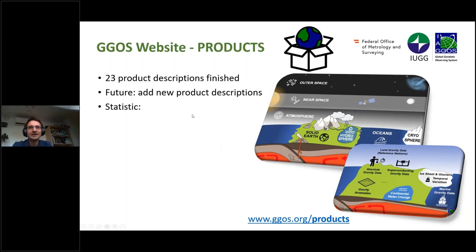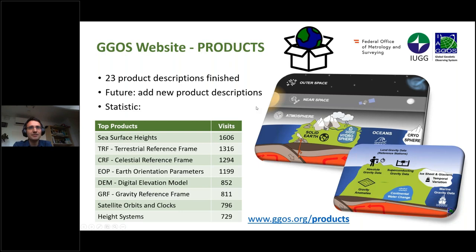Regarding the geodetic products, we have now published 23 product descriptions so far, and we would like to add new products in the future. I've prepared a little statistic about how many visitors visited the products. The top products are, for example, with 1,600 visitors, the sea surface heights, then the terrestrial reference frame, celestial reference frame, earth orientation parameters, and so on. It's very impressive that so many visits were counted on the website.